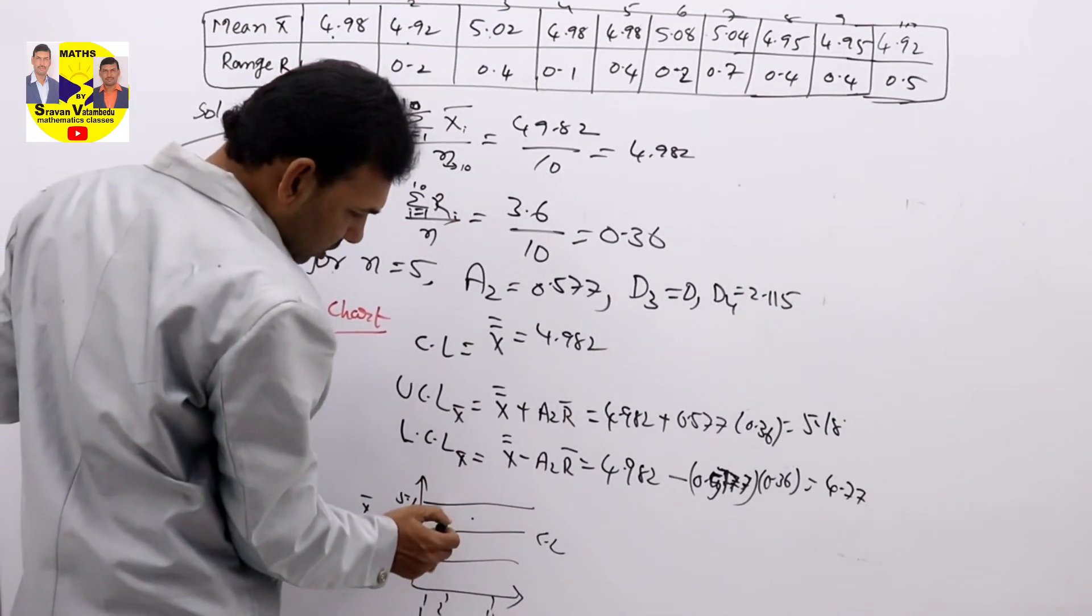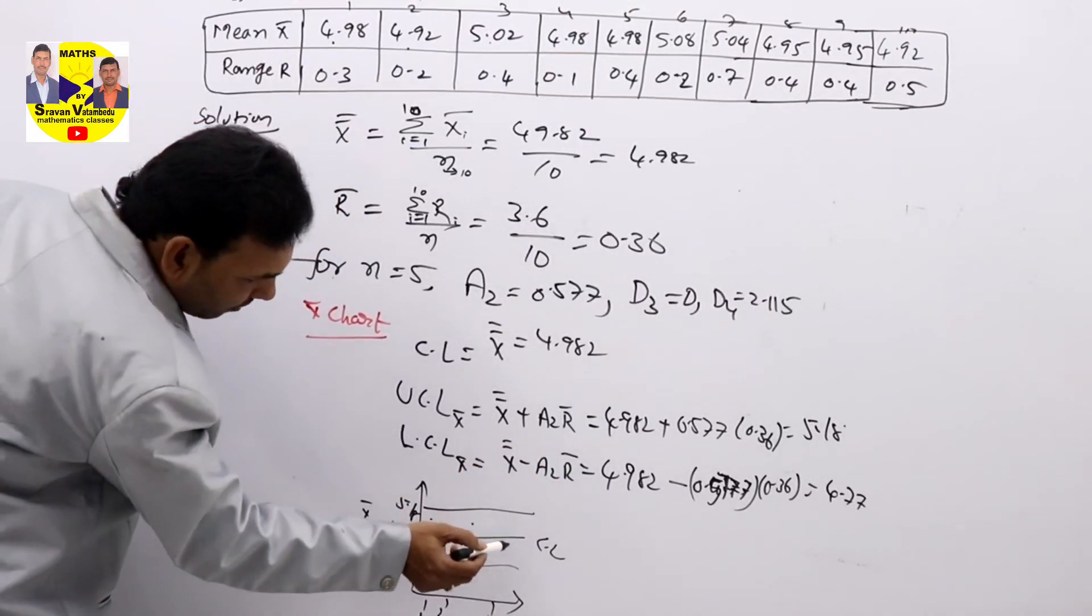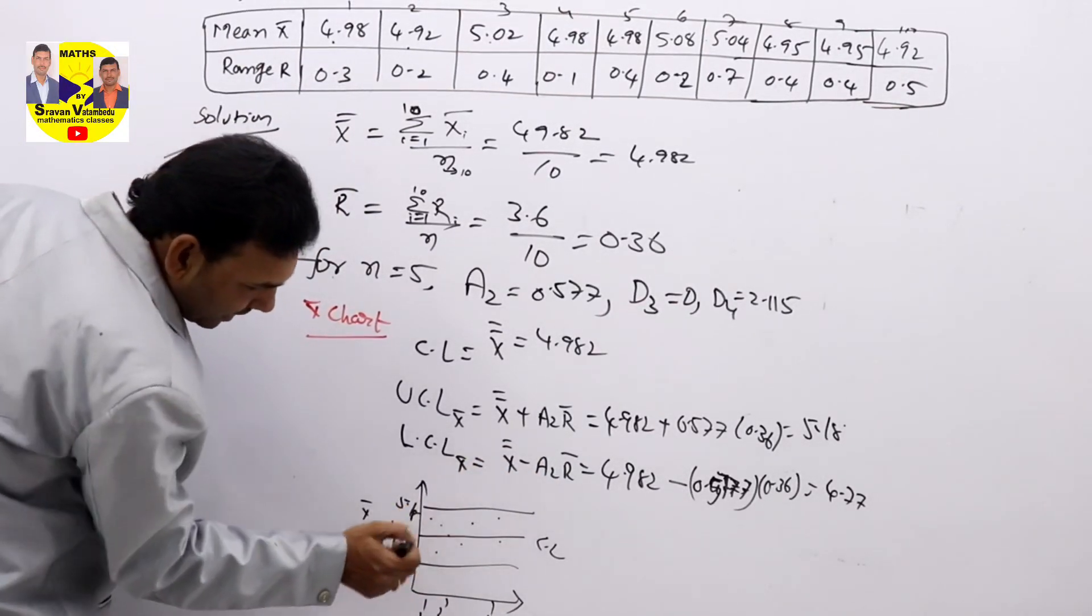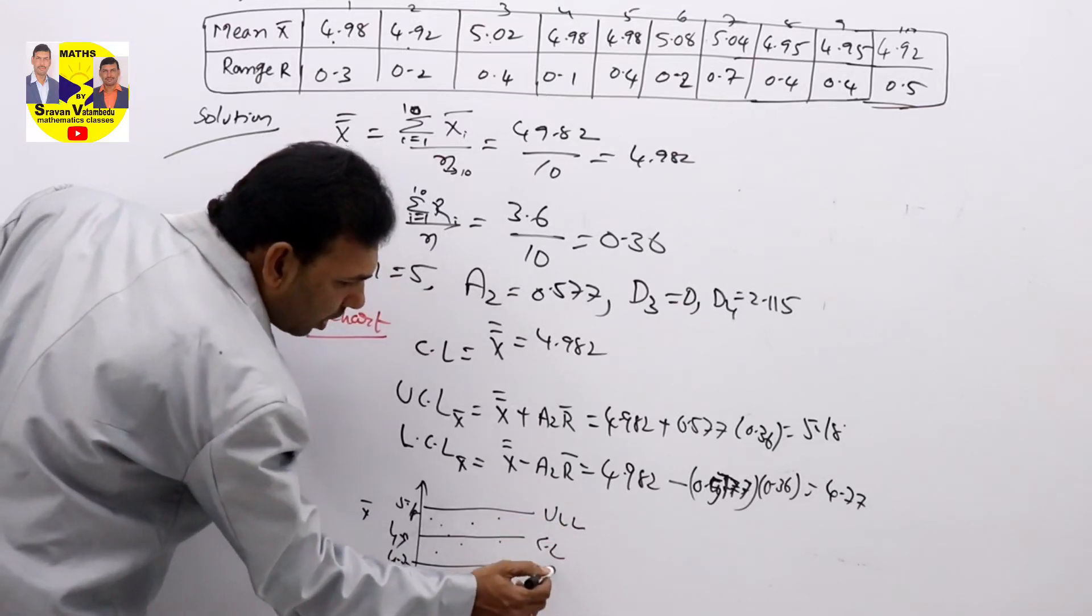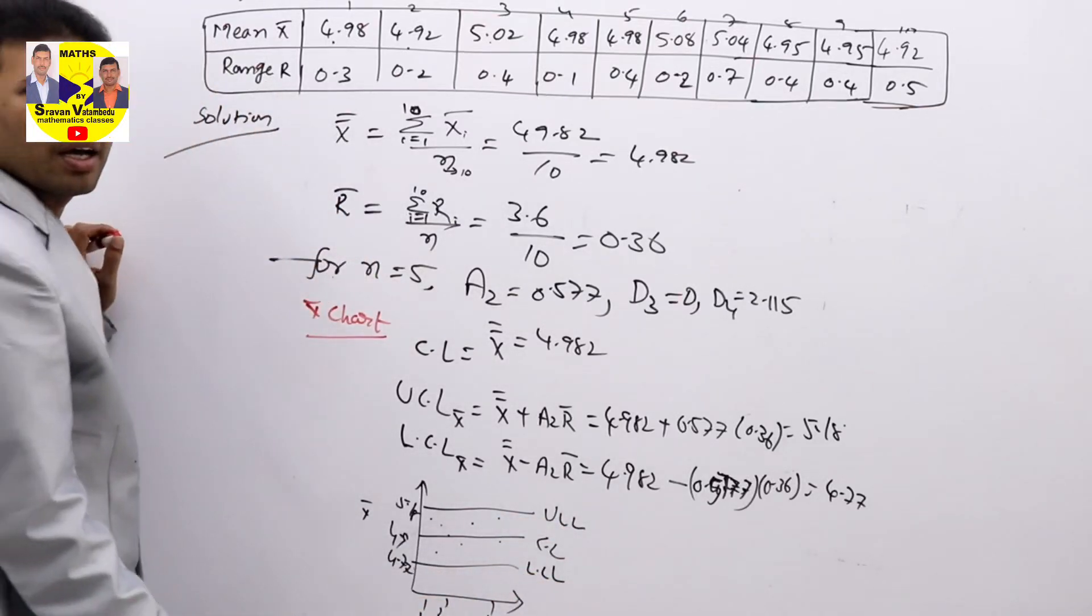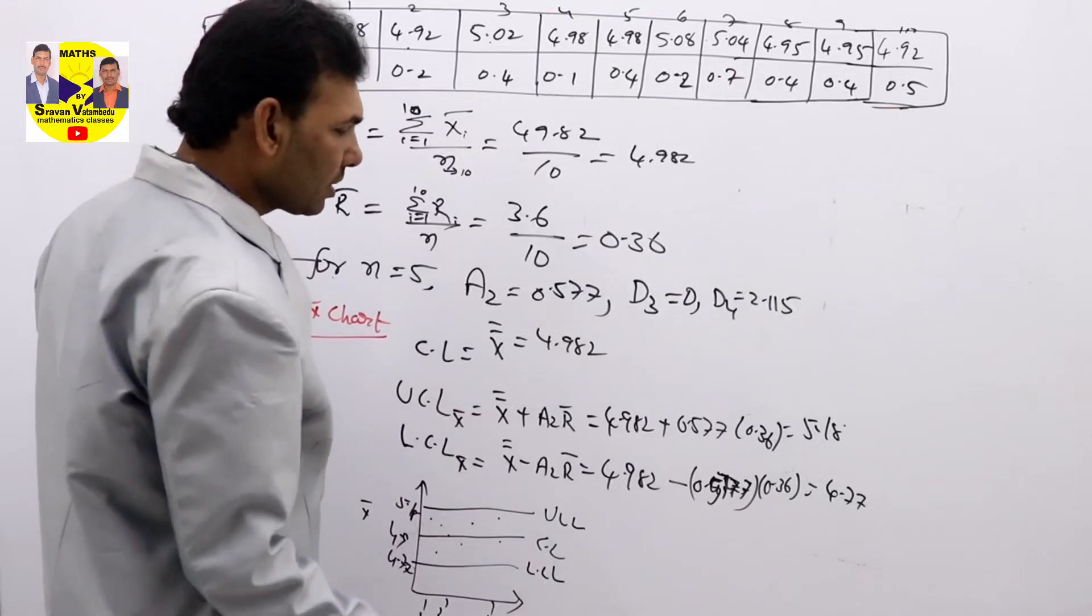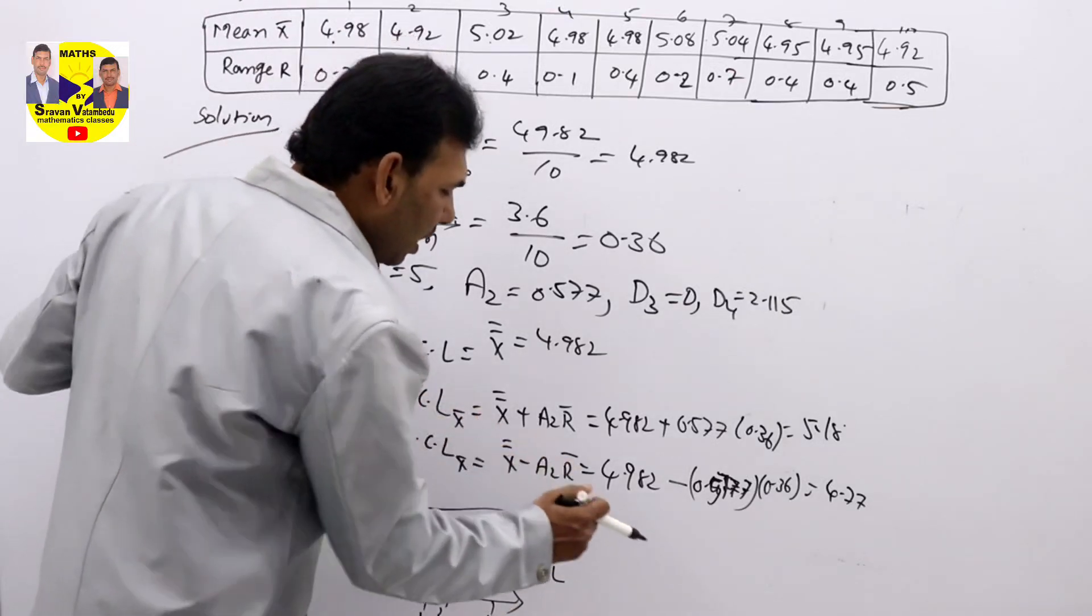4.98, that is also near 5. So all the values, if you plot, you will get in between control lines.